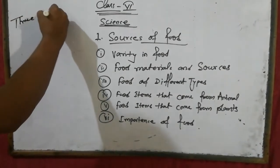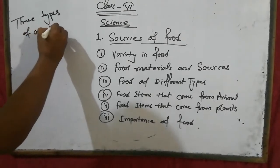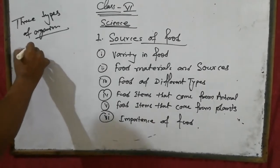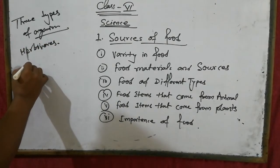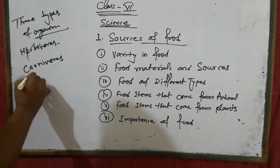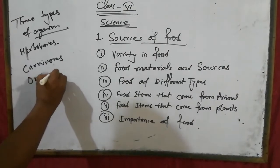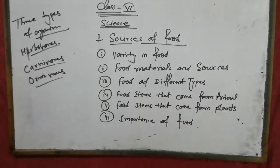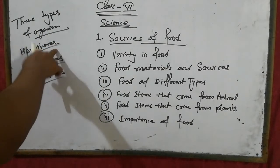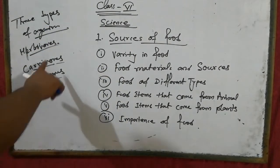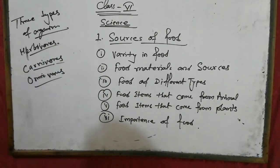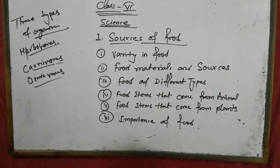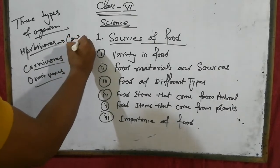There are three types of organisms. First is herbivorous, second one is carnivorous, and third one is omnivorous. Those types of animals who eat only plants and plant products are called herbivorous. Those types of animals who eat only meat — other animals — are called carnivorous. And omnivorous animals eat both plants and animals. Understood?